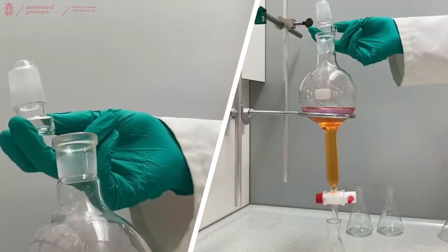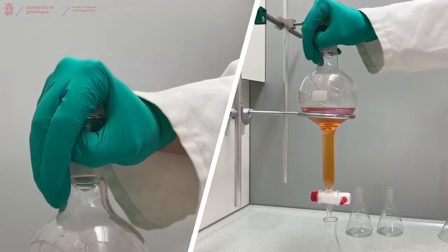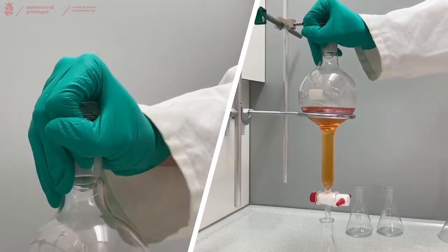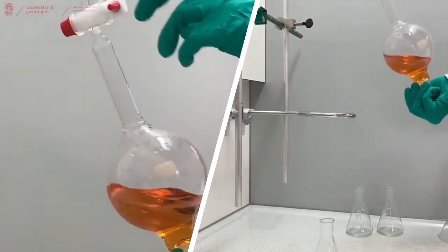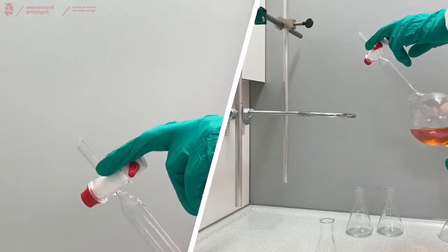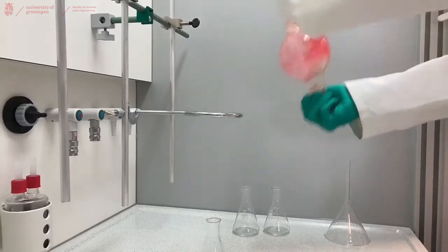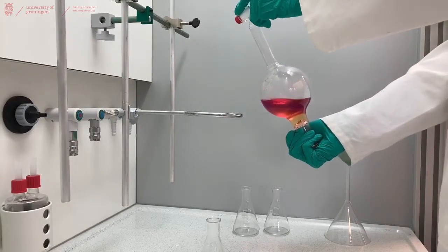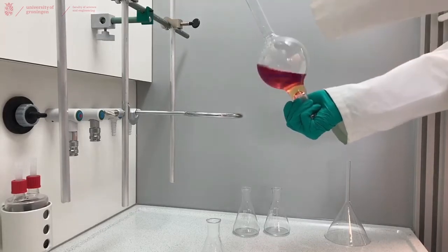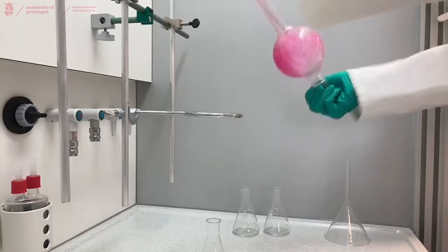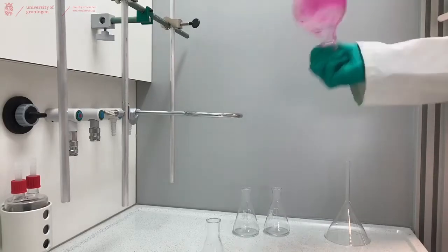Now close the separator funnel by adding the stopper on top of the separator funnel and place your hand on top of the stopper, holding the separator funnel in a firm grip. Lift it up and flip it upside down. Now you can shake your separator funnel to make sure that the extraction has the largest surface amount possible. Don't forget to vent the separator funnel as pressure will build up by the increase of heat from shaking. Repeat this motion several times for proper extraction.